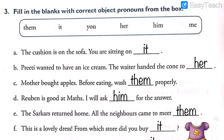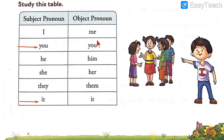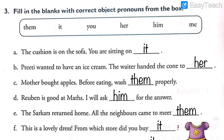So here we complete exercise number 3, and today we also learnt the concept of object pronouns. In the previous video and today's video, we learnt subject pronouns with the help of exercise 1 and exercise 2. Then we studied the table of subject pronouns and object pronouns. Write this table once in homework and daily for one week so that you do not forget the difference between subject pronouns and object pronouns. I hope you have understood everything. Thank you for watching the video and have a nice day.